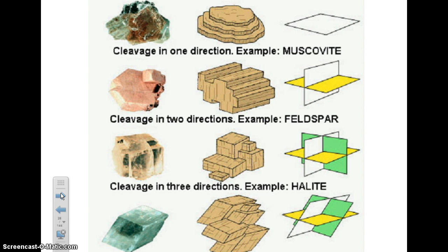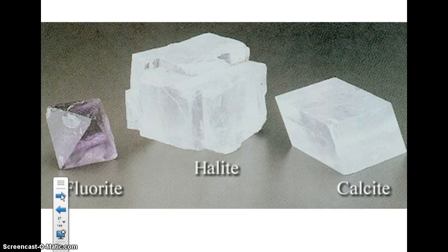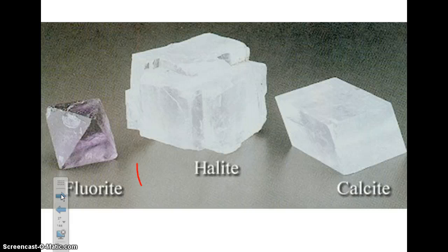Here are some examples of cleavage. The one in the middle is halite — that's cubic cleavage; it looks like a cube. The one on the right is calcite — that's rhombohedral cleavage, which looks like a rhombus. Feel free to pause and take a look at these examples.